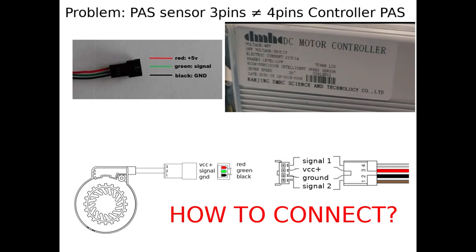The new controller has four pedal assist pins on its hall sensor connector instead of three pins which your standard stock pedal assist sensor has. So how do we make them work together?